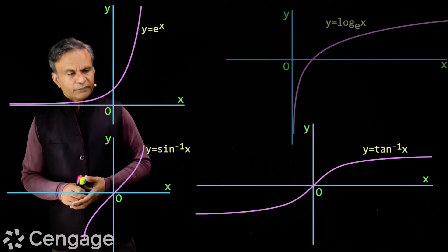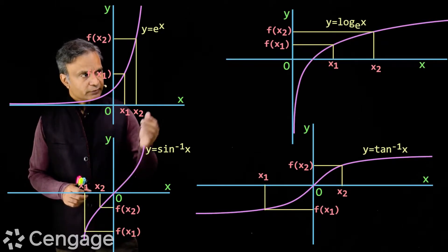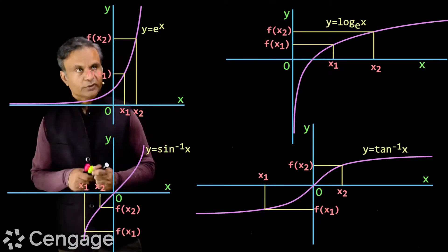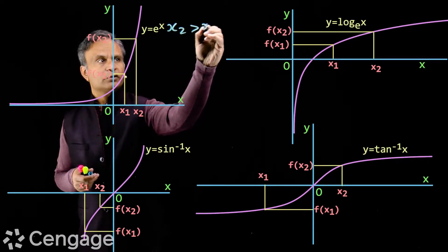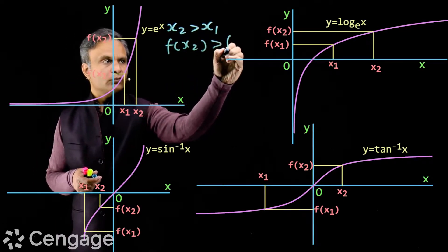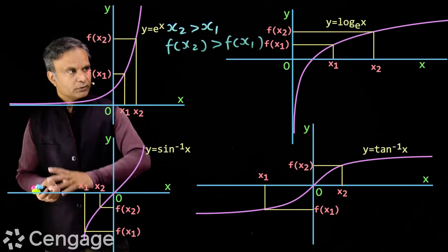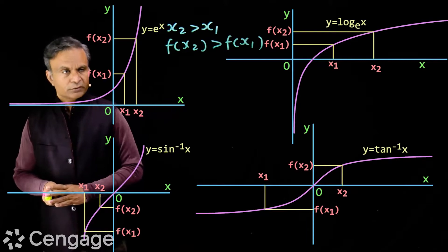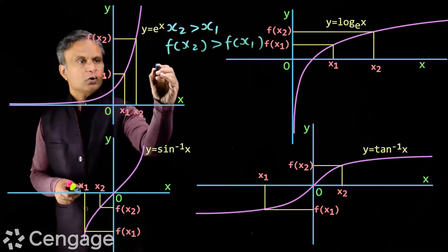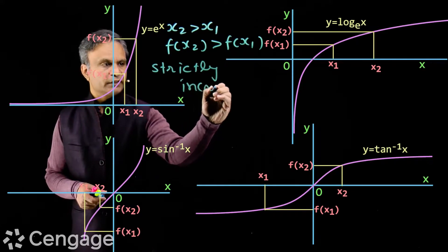If we consider two values x1 and x2 where x2 is greater than x1, then we get f(x2) greater than f(x1). If x2 is more than x1 then f(x2) will be more than f(x1). This is the definition of these types of functions — they are called strictly increasing functions.